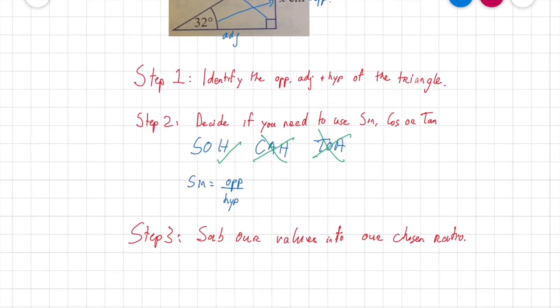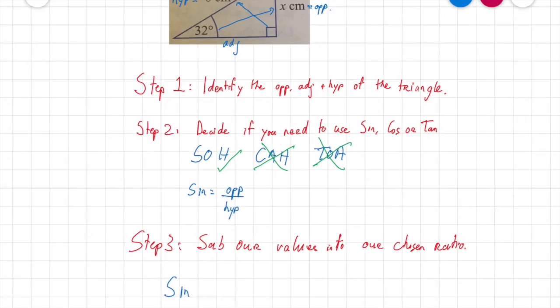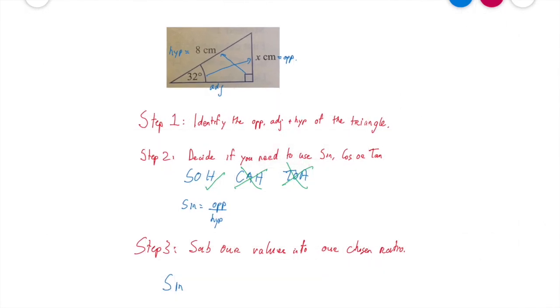So we've picked sine here. So it's going to be sine, and what's our angle in the question? Let's zoom out there and have a look. So our angle is 32 degrees. So it's going to be sine 32.